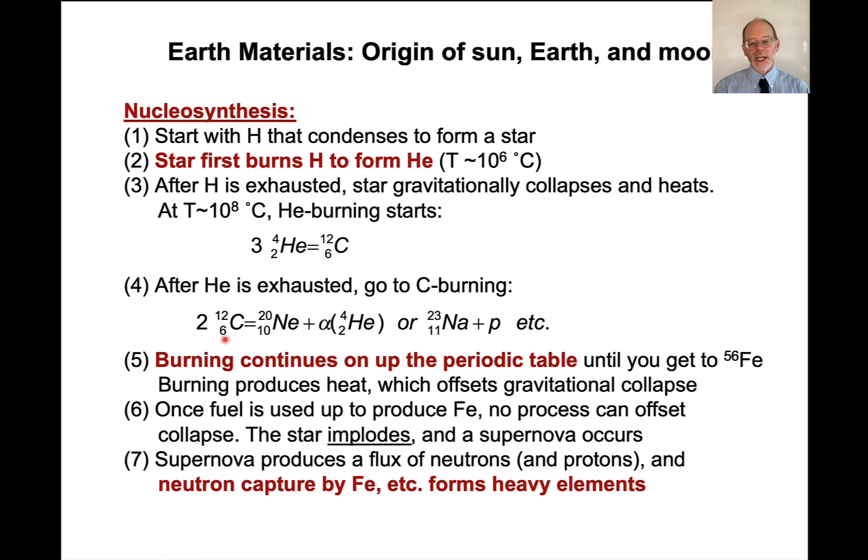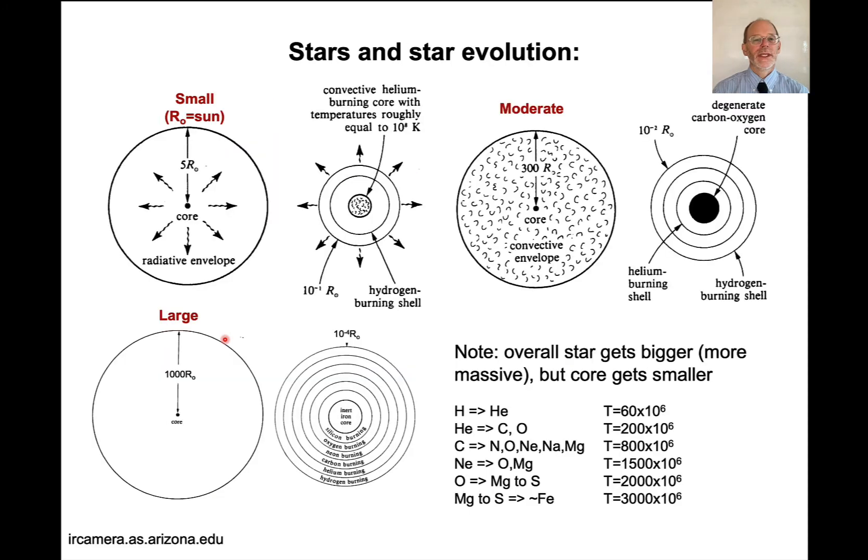And so this burning continues until you get to iron 56. And then at that point, there's nothing to offset the gravitational collapse. And it's at that point that the star catastrophically implodes and this supernova occurs. The supernova produces a flux of neutrons. It also produces protons. But it's mostly neutron capture by iron and other elements to form the heavier elements.